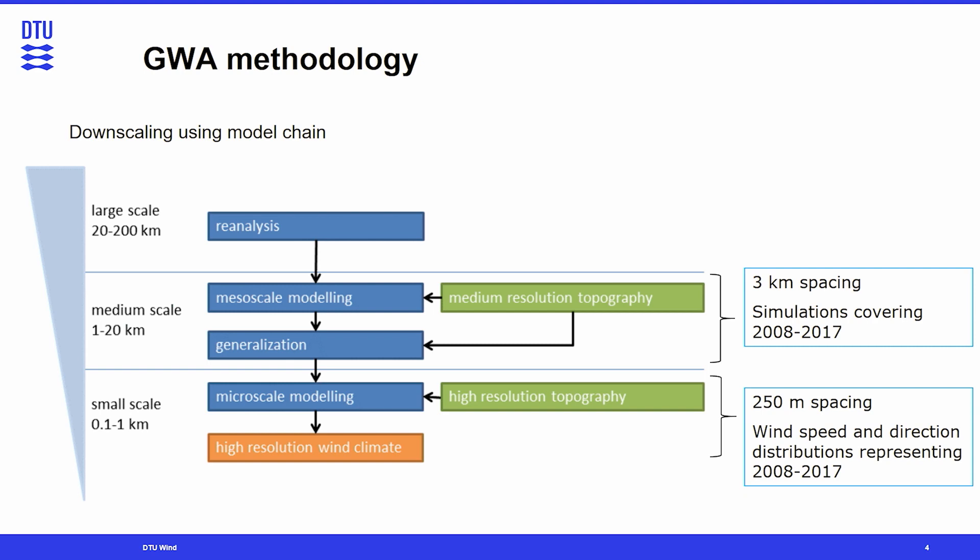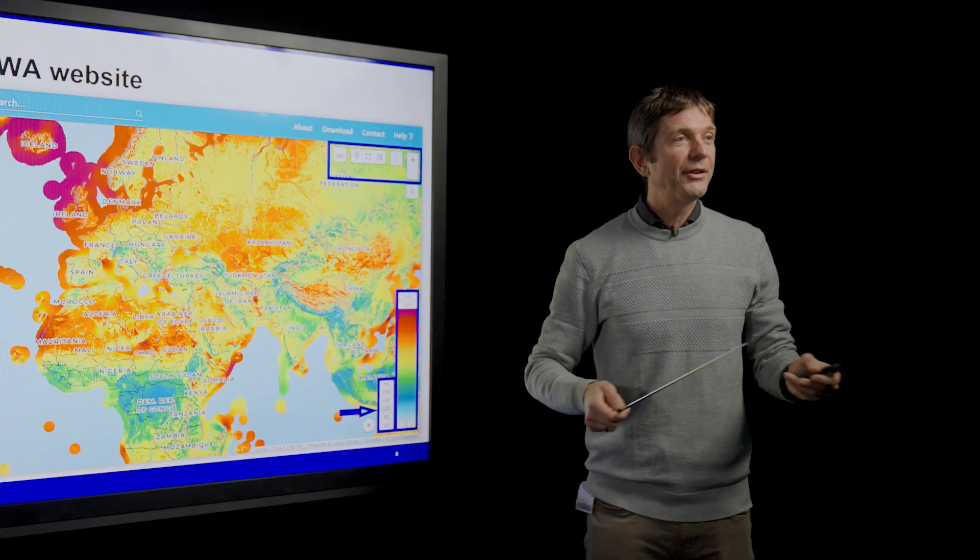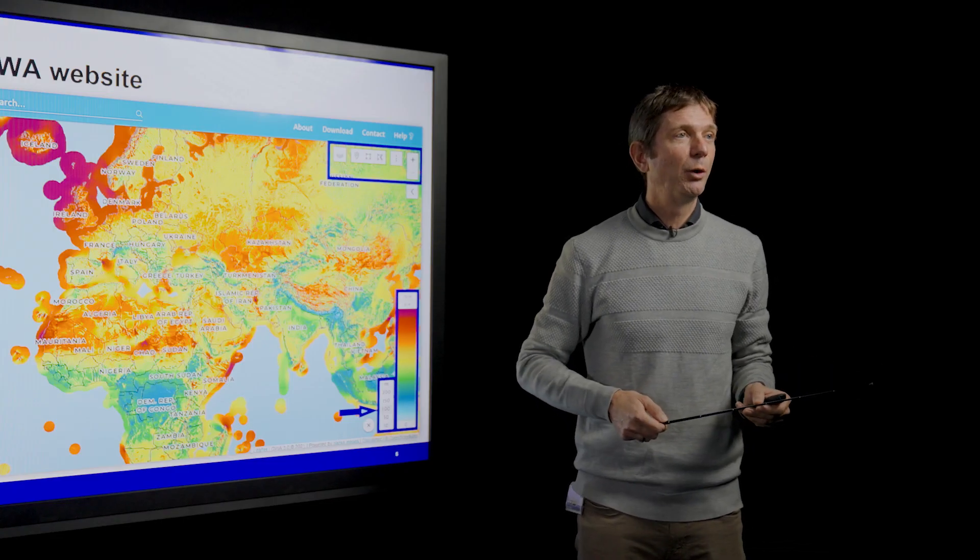And then we move to the microscale modeling, where a calculation is performed every 250 meters. The result of that is wind speed and direction distributions representing the same period, 2008 to 2017. And we end up with the high-resolution Wind Atlas data, which makes up the Global Wind Atlas. The way we disseminate all of that data is through a web page.